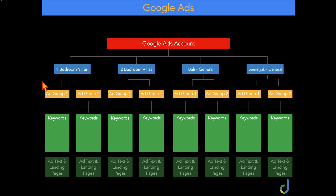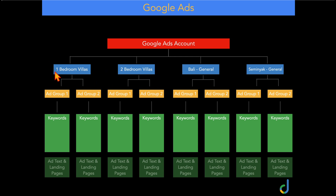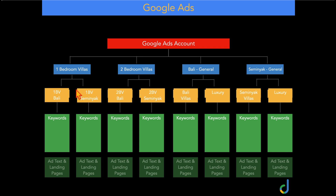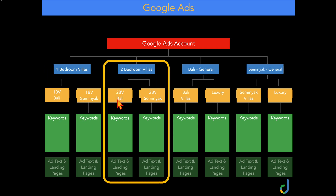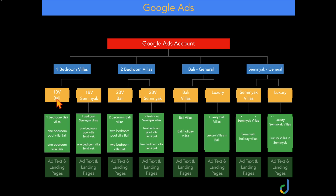For example, if you've got an account targeting a villa resort in Bali, you'd have individual campaigns around your core accommodation types: one-bedroom villas, two-bedroom villas, a Bali general campaign, and a Seminyak general campaign. In the one-bedroom villas campaign you'd have different ad groups around one-bedroom villas Bali and one-bedroom villas Seminyak. In the two-bedroom campaign, ad groups for two-bedroom villa Bali and two-bedroom villa Seminyak — each with only their relevant keywords.